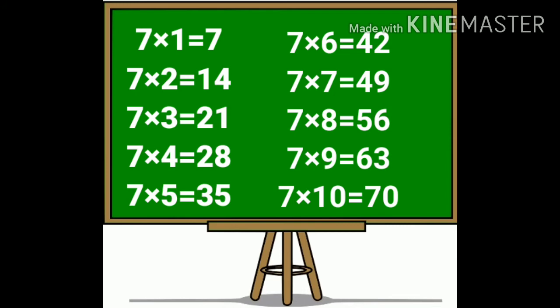7 6's are 42. 7 7's are 49. 7 8's are 56. 7 9's are 63. 7 10's are 70.